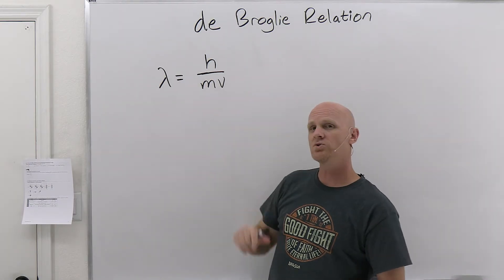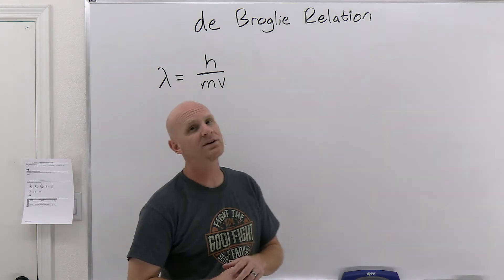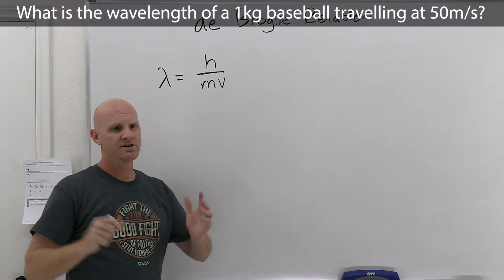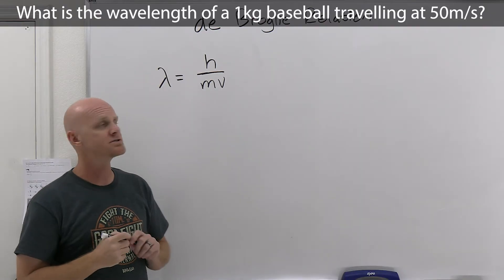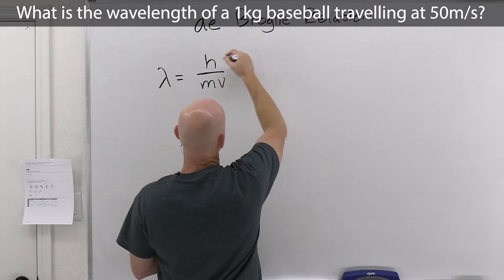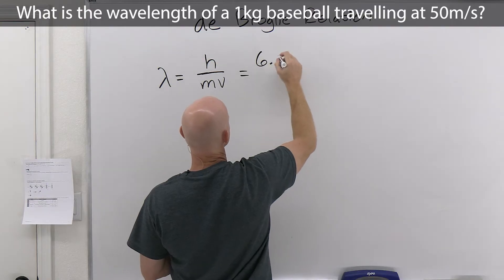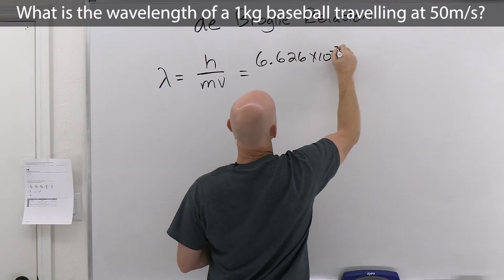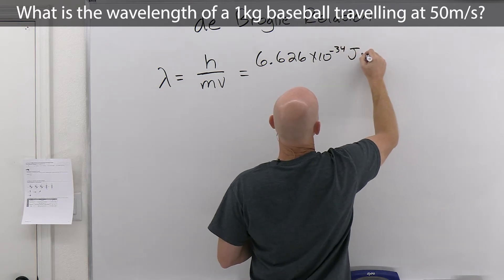Electron diffraction is what it's called. And so in this case, though, we're going to do a quick calculation here. And we're going to calculate the wavelength of a one kilogram baseball traveling at 50 meters per second. That's going to be the question here. And so we're going to take the Planck's constant, same Planck's constant we've been dealing with for a couple of lessons now. So 6.626 times 10 to the negative 34 joule seconds.